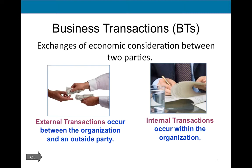We are performing services on account to credit clients — that's an exchange between our organization and our customers. We're paying salaries to employees — an exchange between us and our employees. We're making a purchase of office supplies from Office Depot — again, an exchange between us and Office Depot. All external transactions will have some kind of source document proof: an invoice, a sales slip, or a check number. In chapter three, we deal with a grayer area — internal transactions — which include adjusting and closing entries that occur within the organization with no exchange with a second party.